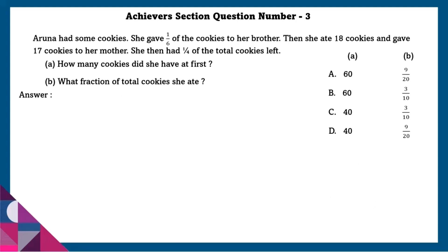Achiever section question number 3: Aruna had some cookies. She gave 1/6 of the cookies to her brother, then she ate 18 cookies and gave 17 to her mother. She then had 1/4 of the total cookies left. How many cookies did she have at first, and what fraction of total cookies did she eat?